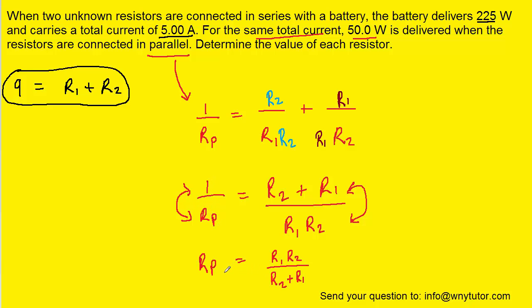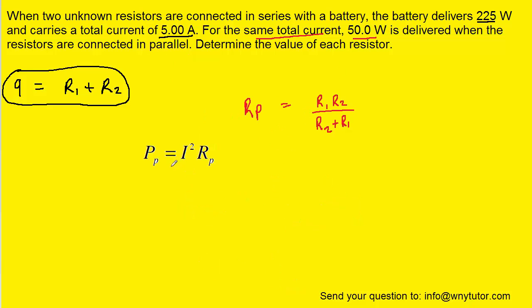Once we have the value for R P isolated, we're going to return to the power equation since we were given the power for the parallel combination of resistors. Notice the question said we have the same total current. So we're going to be able to plug in the 5 amps of current that we used in the first part of the problem.